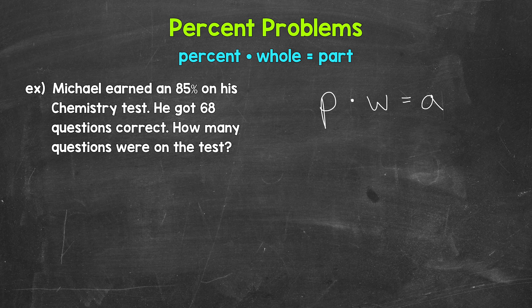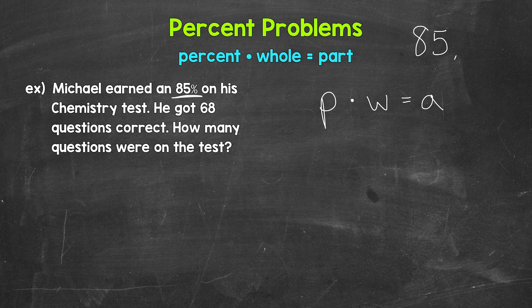Now we need to identify the different parts of the equation and plug in. Let's start with the percent — we have 85%. We're going to plug in the decimal form, which makes the percent easier to work with. To convert a percent to a decimal, divide by 100 by moving the decimal twice to the left. For 85%, that gives us 0.85, or 85 hundredths.